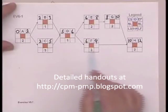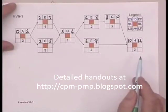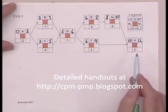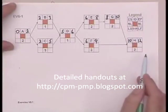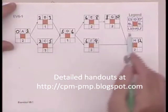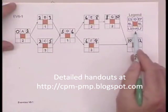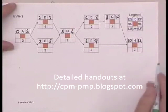In the previous lesson, we did the forward pass to determine the early start and the early finish times for the activities. Now we're going to do the backward pass and identify the late start and late finish, and with that information, the slack for activities.